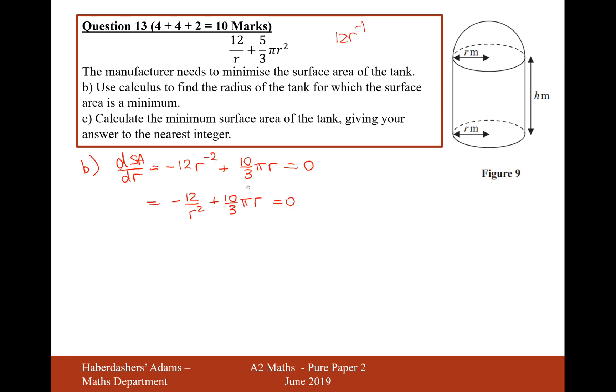Let's now move this expression here onto the right-hand side. It'll be 10 pi r over 3 equals 12 over r squared. It's a bit of cross-multiplying now. 10 pi r cubed equals 36. Divide both sides by 10 pi, 36 over 10 pi.